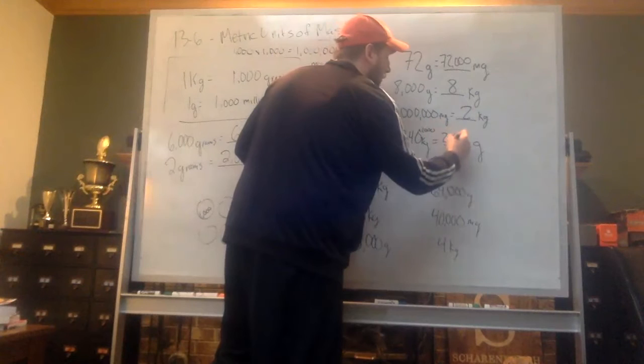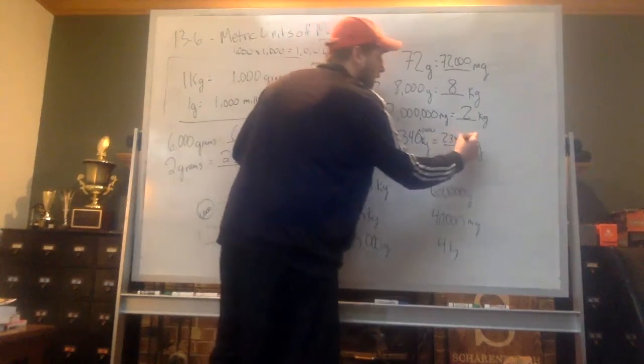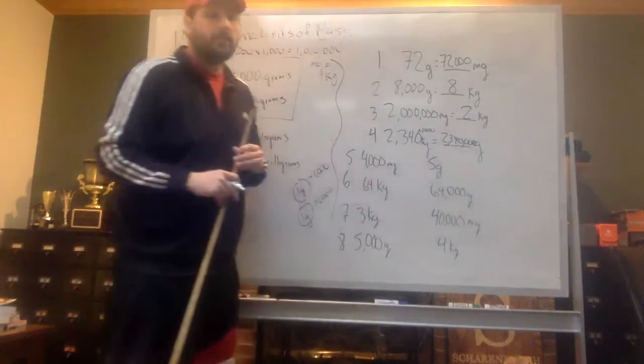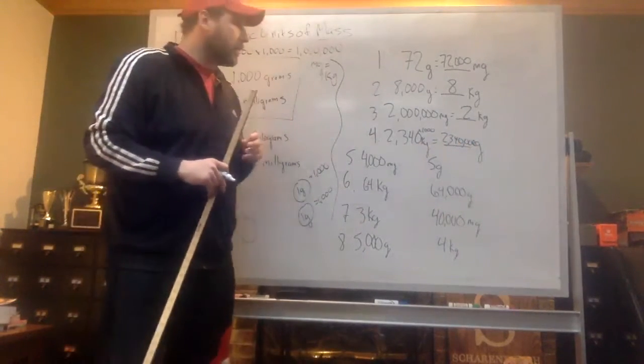So we're going to put the 2,340, we're going to add our three other zeros, we're going to put our commas in there, comma 1, comma 2, we end up with 2,340,000 grams.